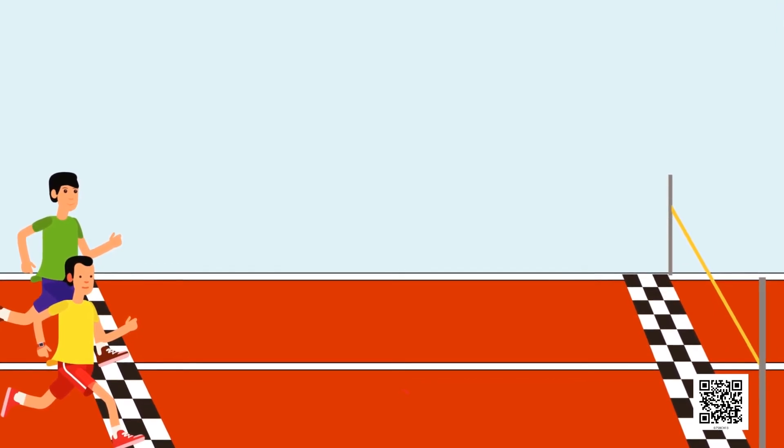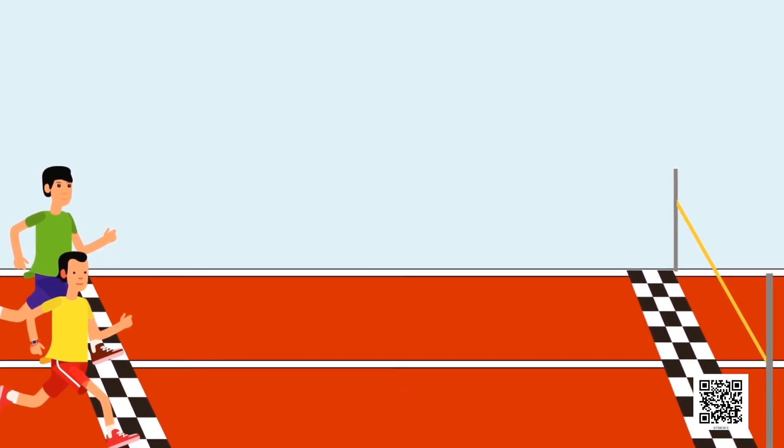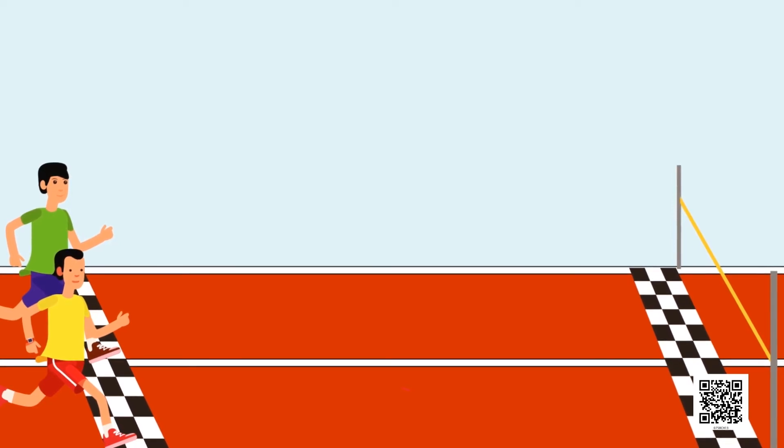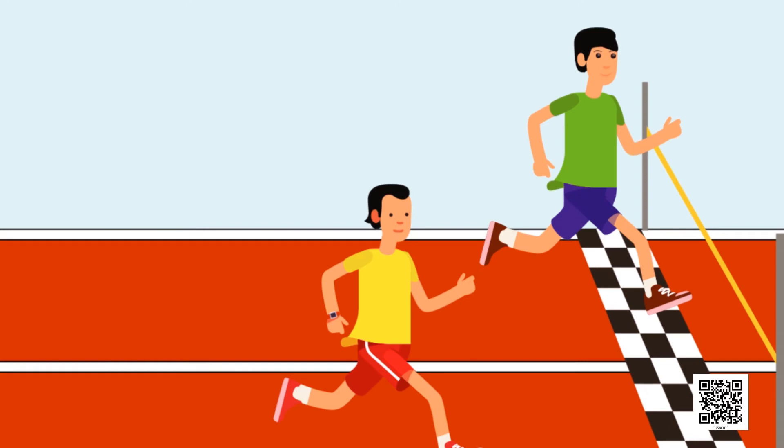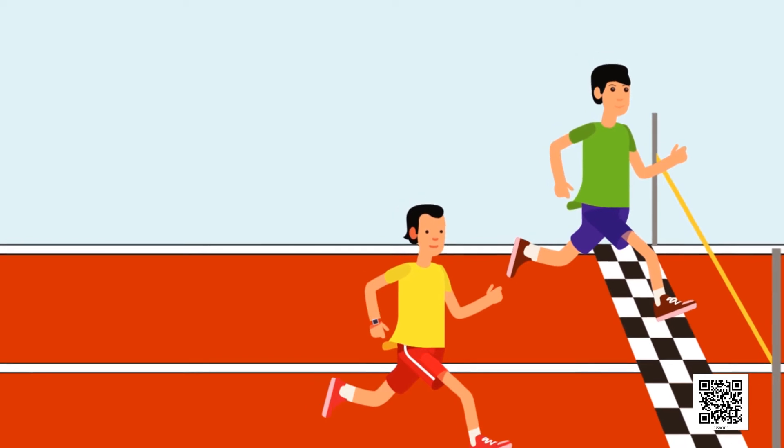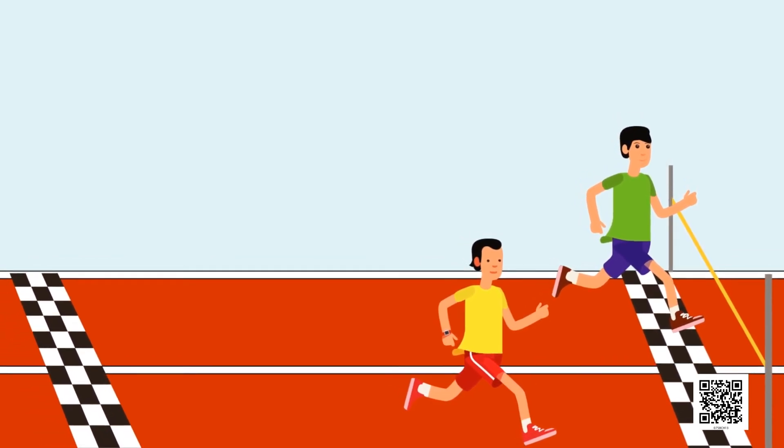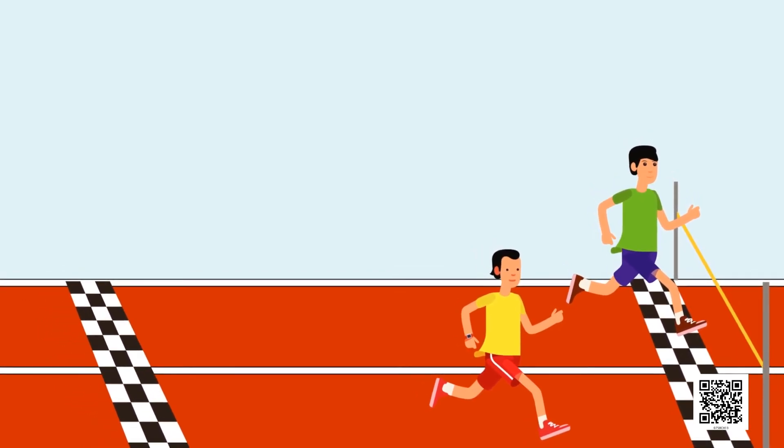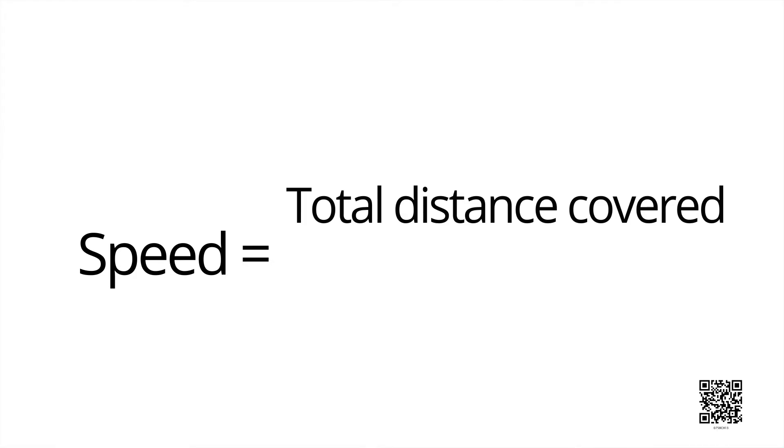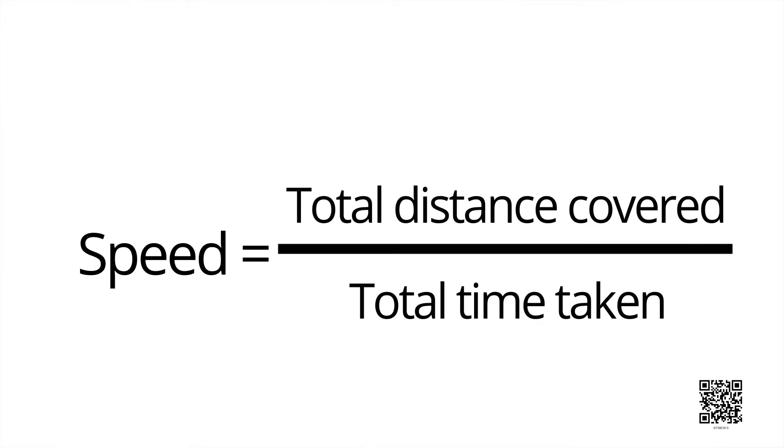Here in this example we have taken specific time, but we can take another way to measure the speed in which we will take a specific distance. For example, when there is a race competition in our school, there is one starting point and one end point. We fix the distance like 100 meter race or 200 meter race. All students start the race at a specific time, but the student who reaches first at the end point wins. It means the speed of that student is more than others.